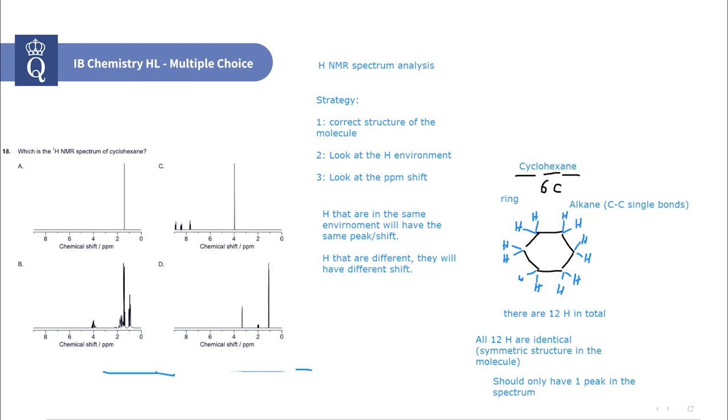Now we use step three to help us eliminate which one is the most likely answer. For option A, the shift is roughly between one and two. This indicates that those hydrogens are in an alkane environment, which matches our molecule. Cyclohexane is an alkane, so option A is looking promising.